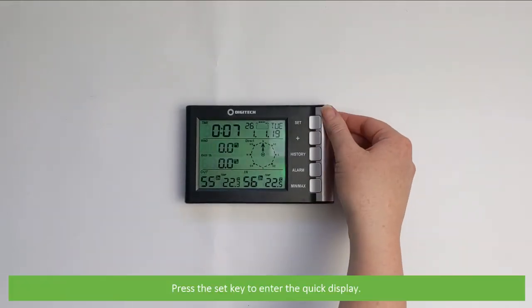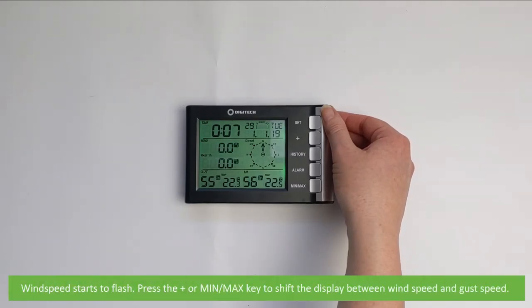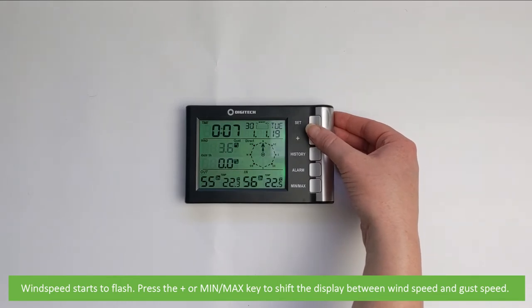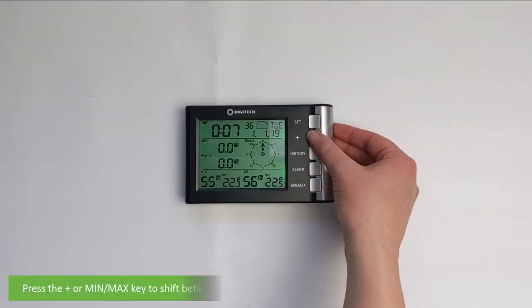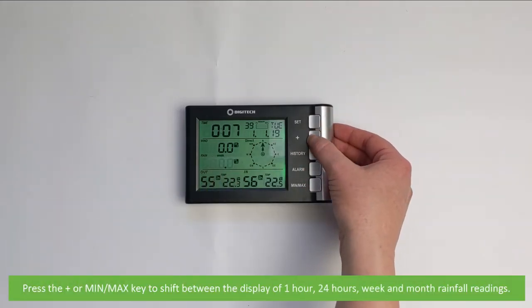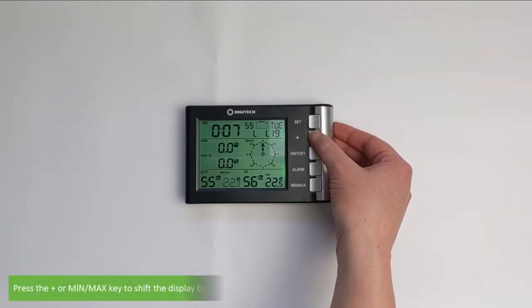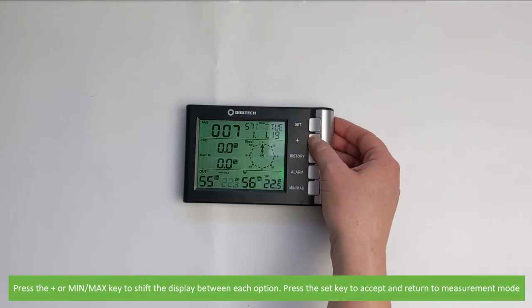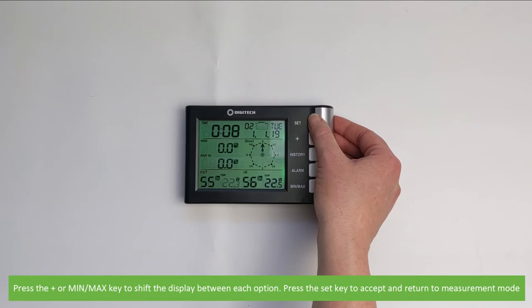Press the Set key to enter the quick display. Wind speed starts to flash. Press the plus or min max key to shift the display between wind speed and gust speed. Pressing Set again moves to rainfall quantity. Press the plus or min max key to shift between the display of 1 hour, 24 hours, week or month rainfall readings. Lastly, select between outdoor temperature, wind chill and dew point. Press the plus or min max key to shift the display between each option. Press the Set key to accept and return to measurement mode.